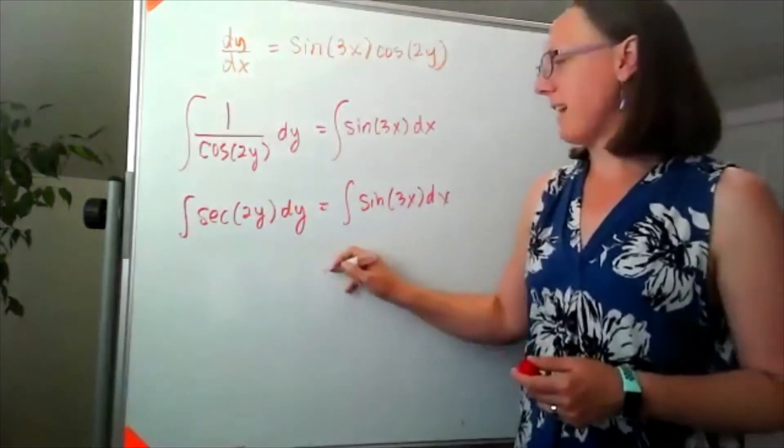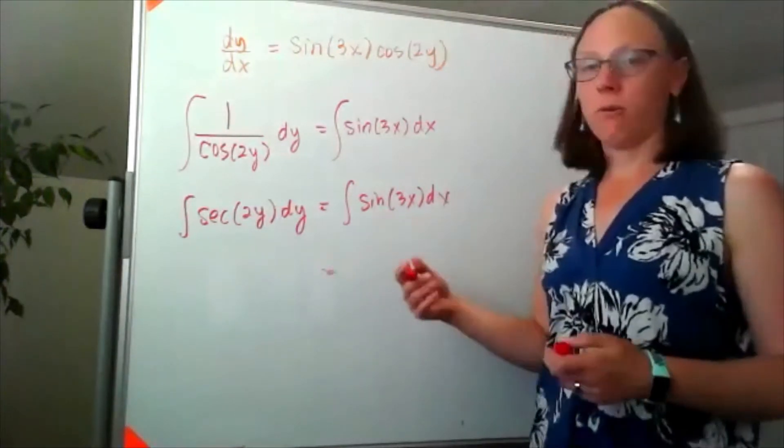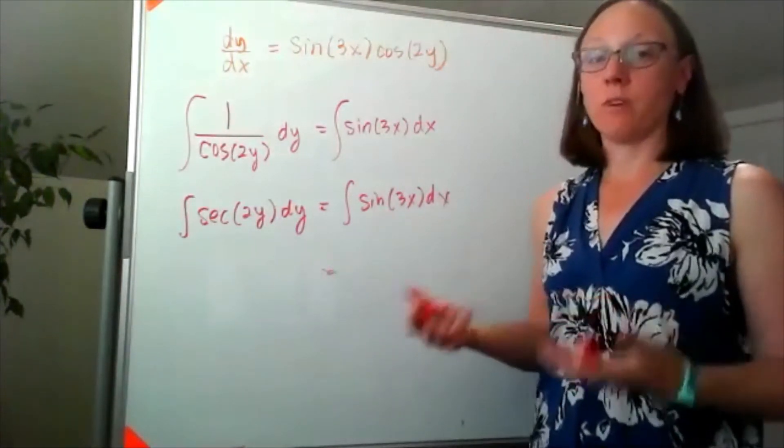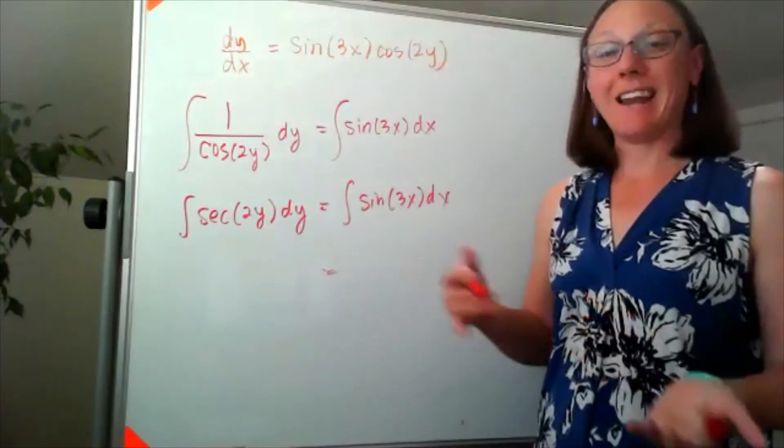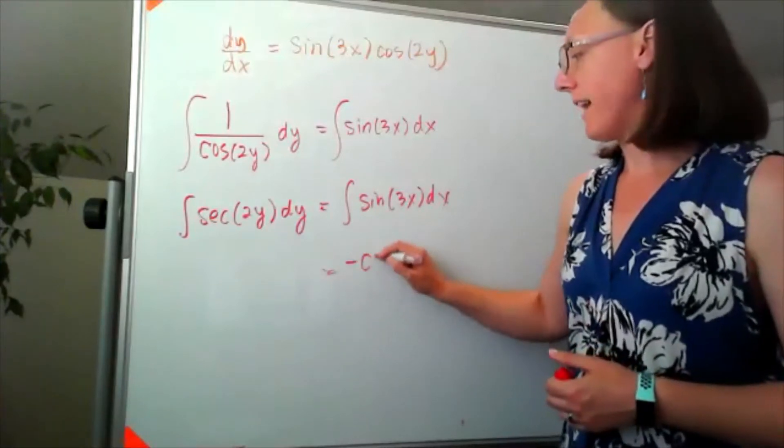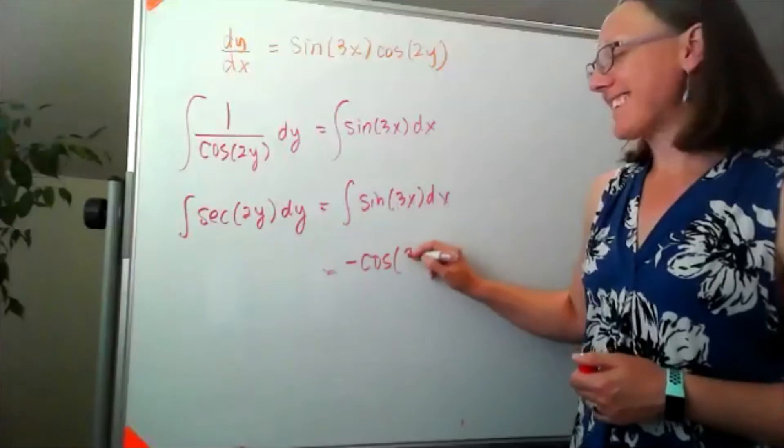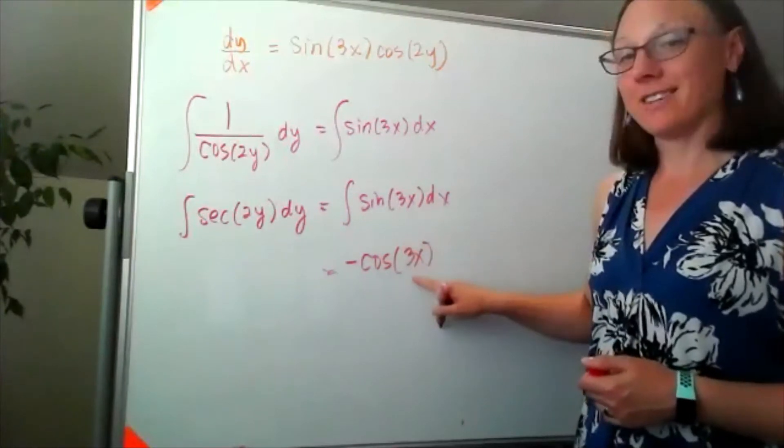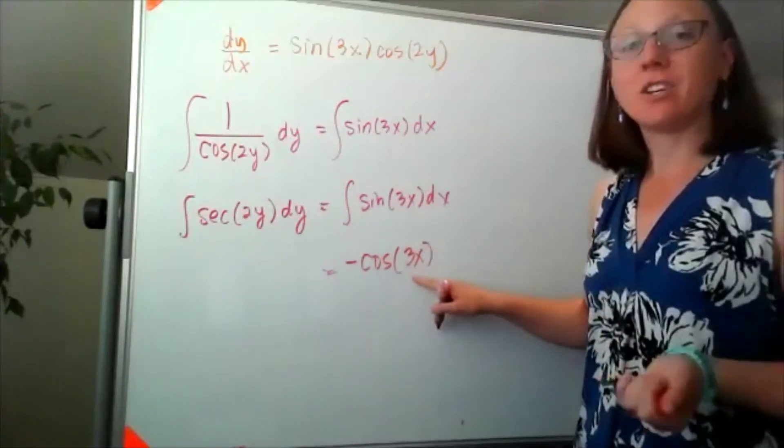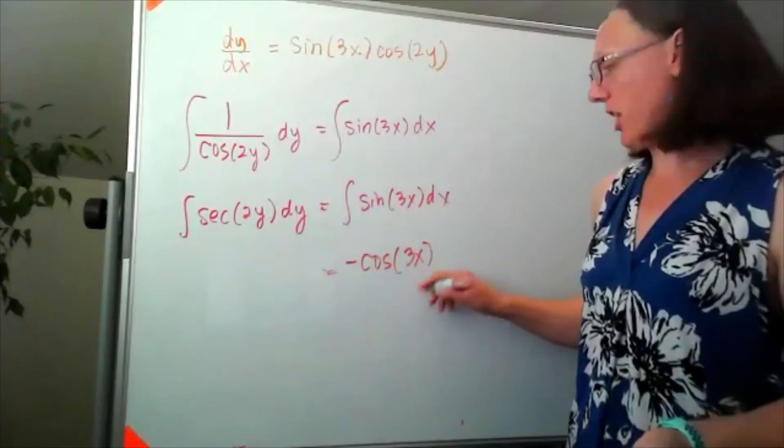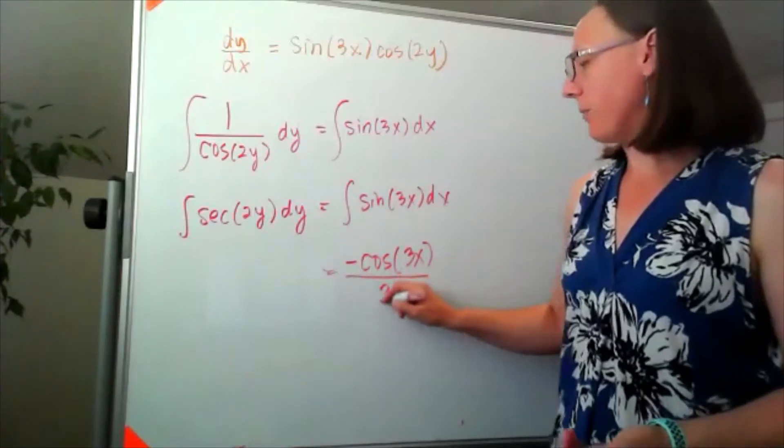I'll do this side first. I'm looking for the function whose derivative is sine—that's going to be negative cosine. Calculus cannot change the angle inside, but we do need to correct for what would happen with chain rule and divide by 3.